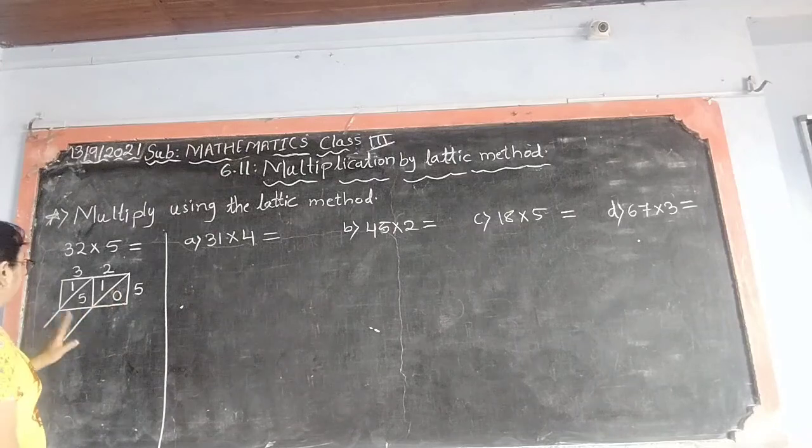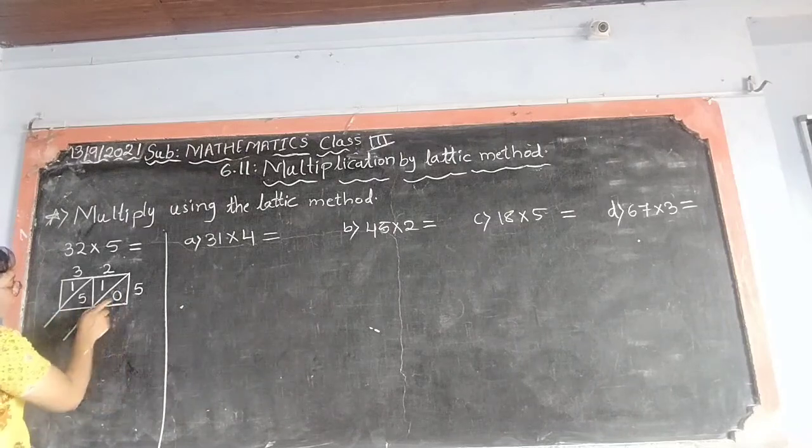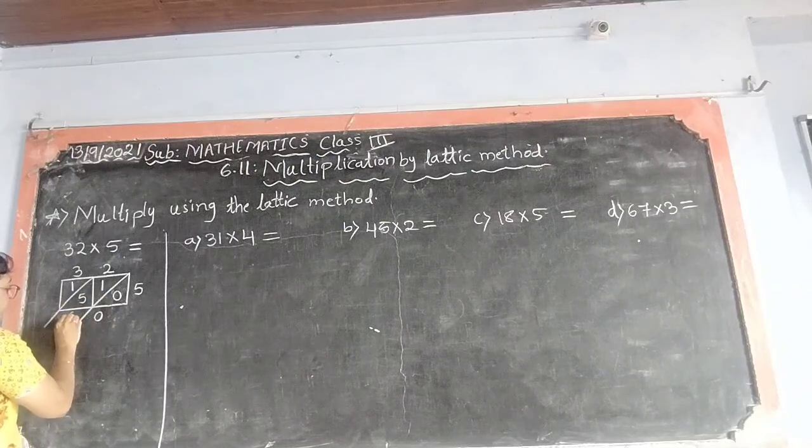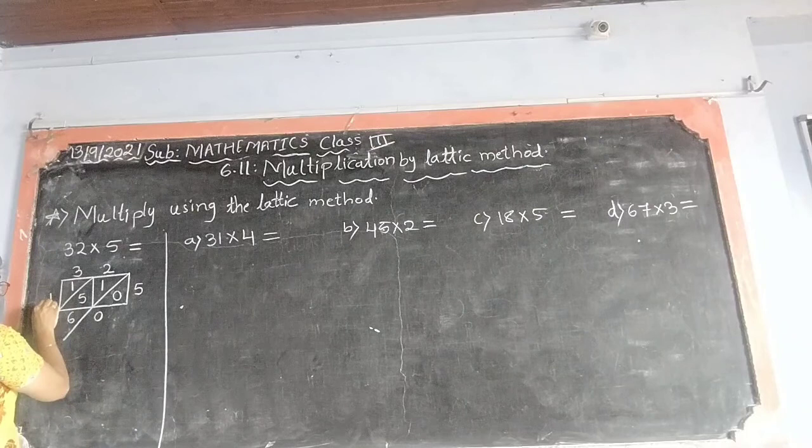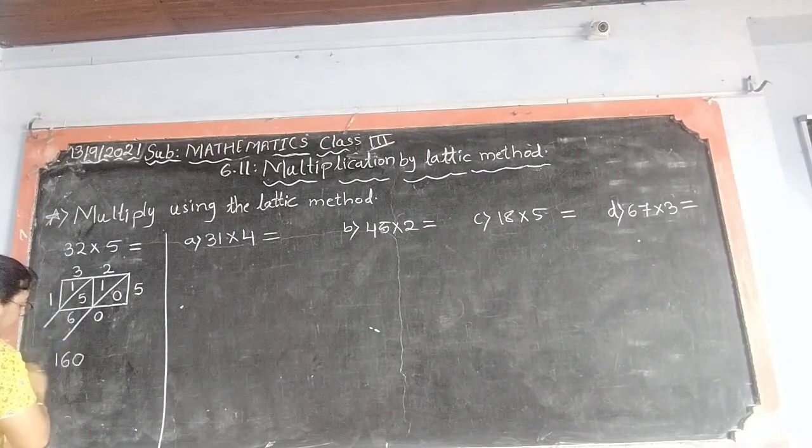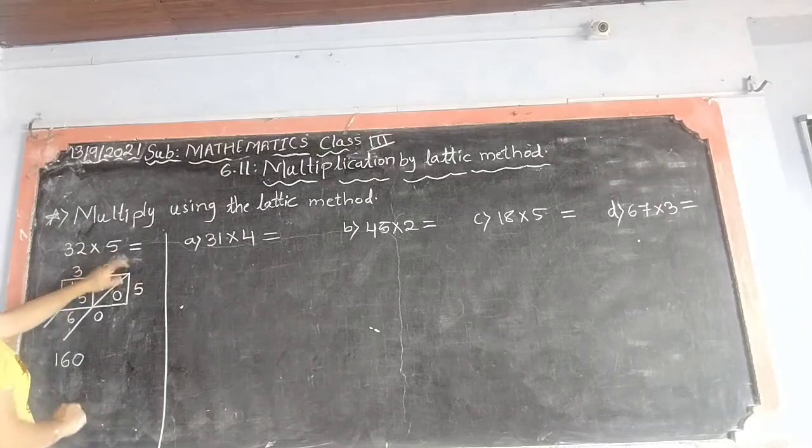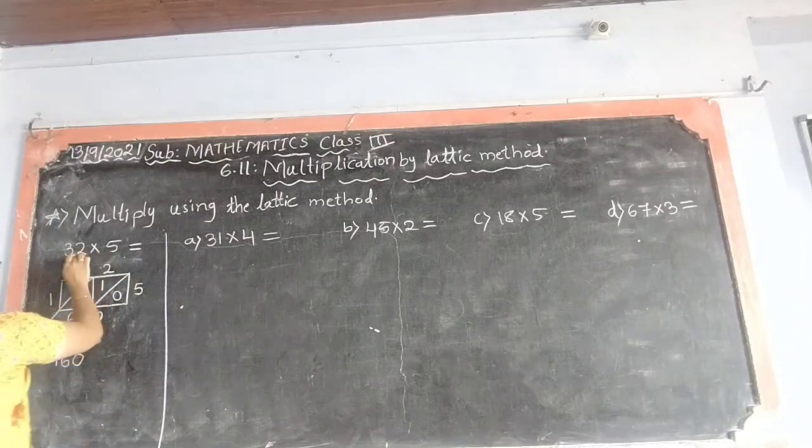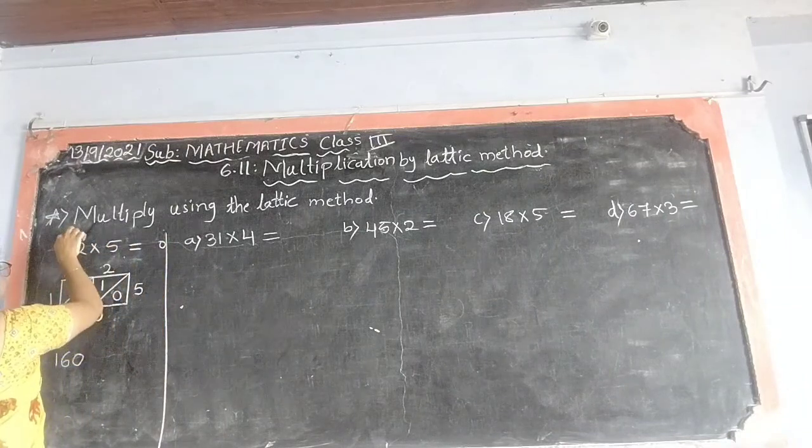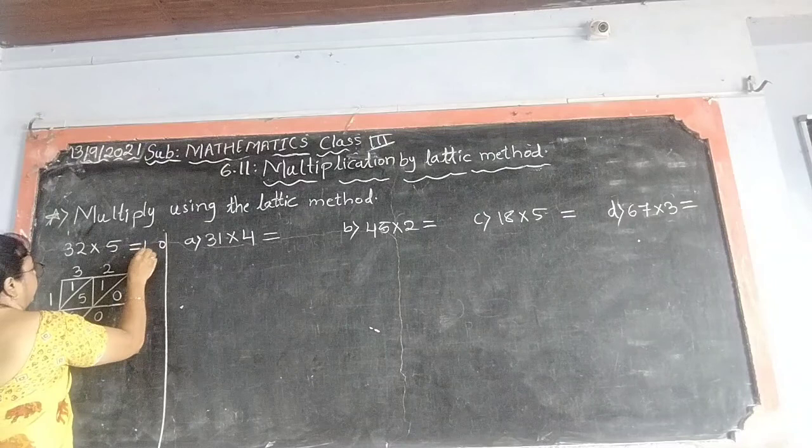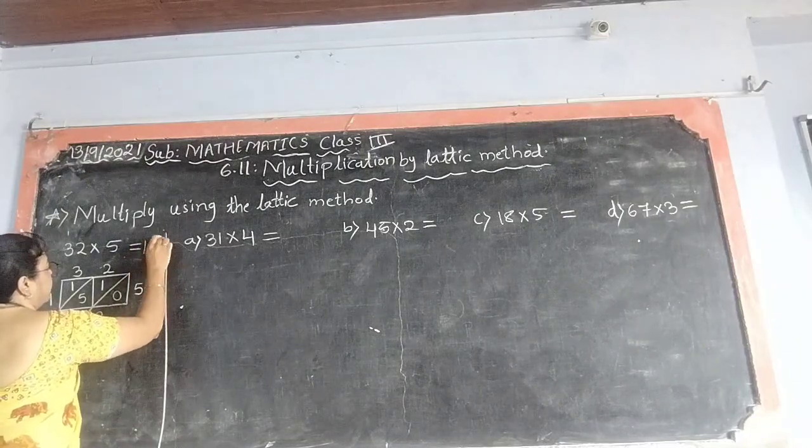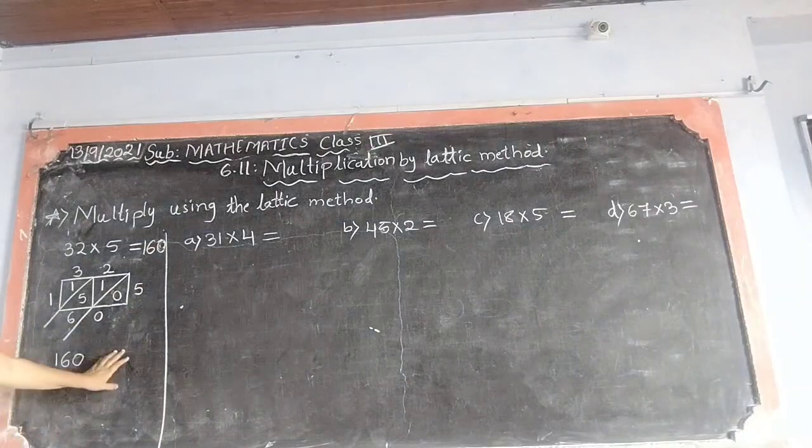Understanding? Now, we have to remove the sum. Now, 0 as it is, 5 plus 1 is 6, 1 as it is. Means answer is 160. Product is 160. Now, here see, regular method we will do. 5 twos are 10, 5 threes are 50, plus 1 is 60. Understanding? Very easy it is. No difficulties. Understood? Once again, we will do here.